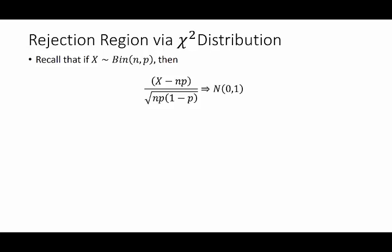So to make that connection let's recall that by the central limit theorem, if you have a random variable X which is binomial with n trials and success probability p, then the ratio of (X minus expected value of X) divided by the square root of np(1-p), which is the SD of a binomial, will converge in distribution to a standard normal as n goes to infinity.